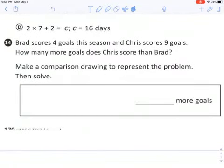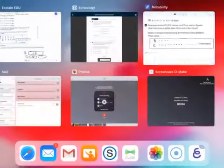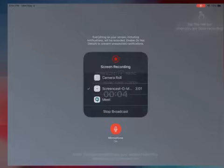And number fourteen, Brad scores four goals this season and Chris scores nine. How many more goals does Chris score than Brad? Make a comparison drawing to represent the problem. So if you remember this one, just hope you get set up. There's Brad and there's Chris. Brad has four. Chris has nine. Finish that picture. So then if you do this, Chris has nine, five, six, one, two, three, four, five, six, seven, two, three, four, five, six, seven, eight, nine. My picture's not done and you need an answer. Finish the picture and get the answer. But you can use those notes to help you. Ask questions if you need anything and have fun.